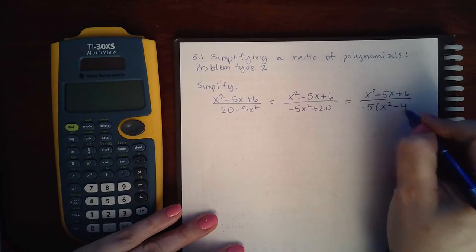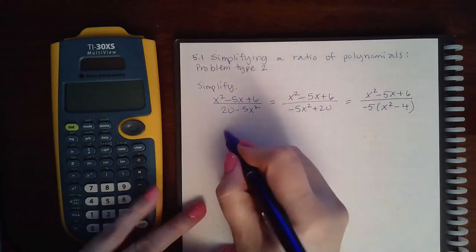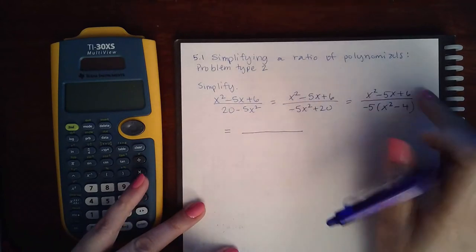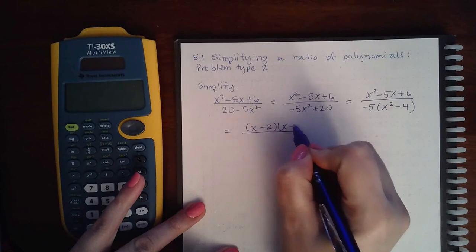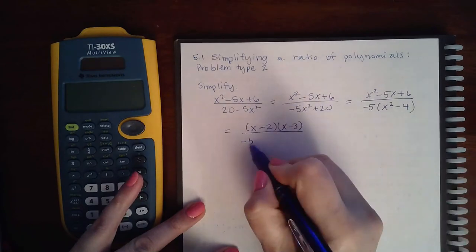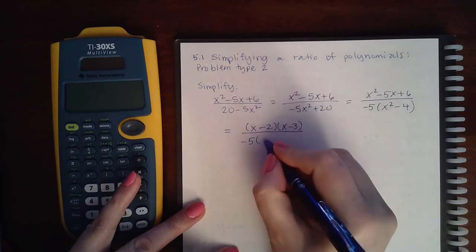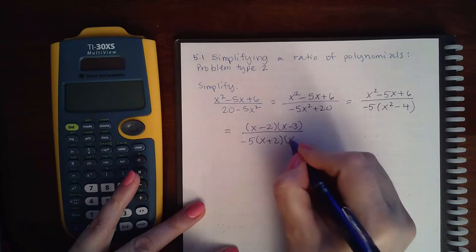So I end up with x squared minus 4. Then I factor this trinomial: that would be x minus 2 and x minus 3. And then I factor this difference of squares: x plus 2 and x minus 2.